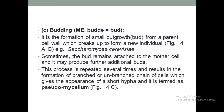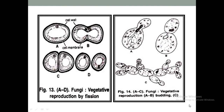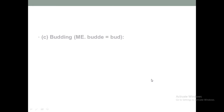This process is repeated several times and results in the formation of a branched or unbranched chain of cells, which gives the appearance of a short hypha. This is termed a pseudomycelium, as seen in figure 14c. This branching structure represents the pseudomycelium.